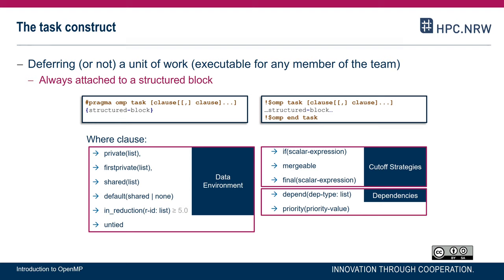All tasks are independent from other tasks. The task construct accepts several clauses: data scoping clauses to define the data environment — data can be private per task or shared, meaning the task holds a pointer to the shared data. There are clauses to determine cutoff strategies, which I will explain later, and clauses like depend to express task dependencies, and priority to influence scheduling — both topics for a different video lecture.